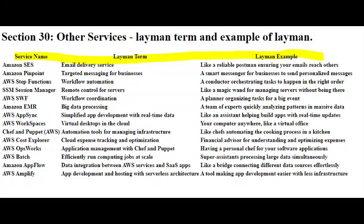Let's say you have an online store and you want to keep track of your customer data in both your sales system and your marketing tool. Normally, you might have to copy and paste, or manually export and import data between these systems. With Amazon AppFlow, it's like having a conveyor belt that automatically moves information back and forth. For instance, when a customer makes a purchase, AppFlow ensures that the sales data is seamlessly sent to your marketing tool. This way, you can run targeted campaigns without spending time on data transfers. It's like having a helper that takes care of the data movement, making sure your different apps work together smoothly without you having to do the heavy lifting.